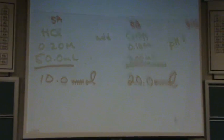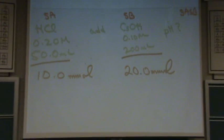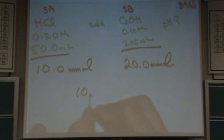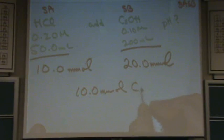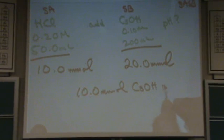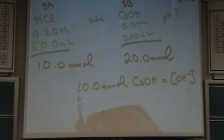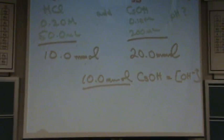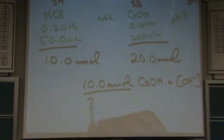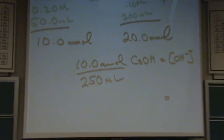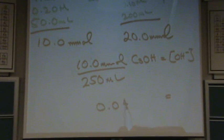We will say, and the base is in excess by how much? Yeah, 10 millimoles. I got that from subtracting these two numbers. Excess of CsOH. Well, the nice thing of knowing it's a strong base is that's equal to the OH minus concentration when I divide by the total volume. Total volume is 200 plus 50, 250 milliliters. This will give me the molarity, which is equal to 0.040 molar. That's the OH minus concentration.